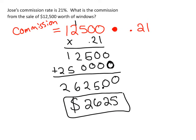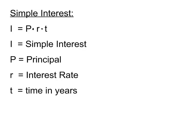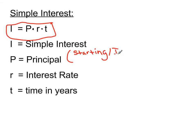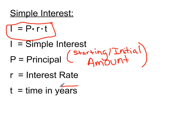Chapter 6.8a is about simple interest. The formula is I equals P times R times T. I represents simple interest; P is the principal, meaning the starting or initial amount — either deposited in a bank or borrowed; R is the interest rate given as a percent that you convert to a decimal; and T is time, which must always be in years.